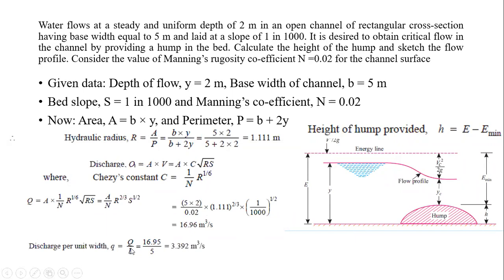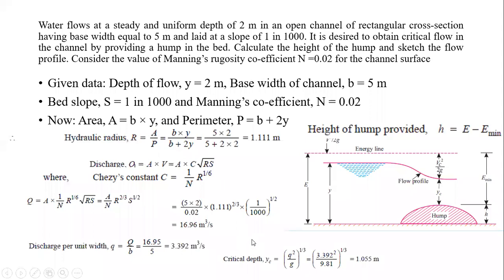The discharge per unit width, q = Q/b = 16.95 / 5 = 3.392 m³/s per meter width. Then to calculate the critical depth yc, we use the relation yc³ = q²/g, so yc = (q²/g)^(1/3). Substituting q = 3.392 and g = 9.81, we get yc = 1.055 m.